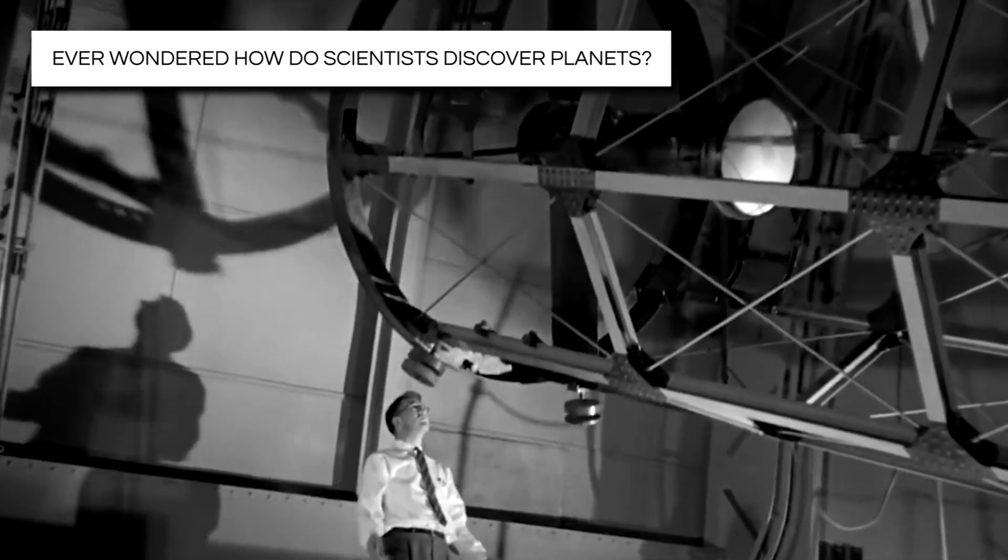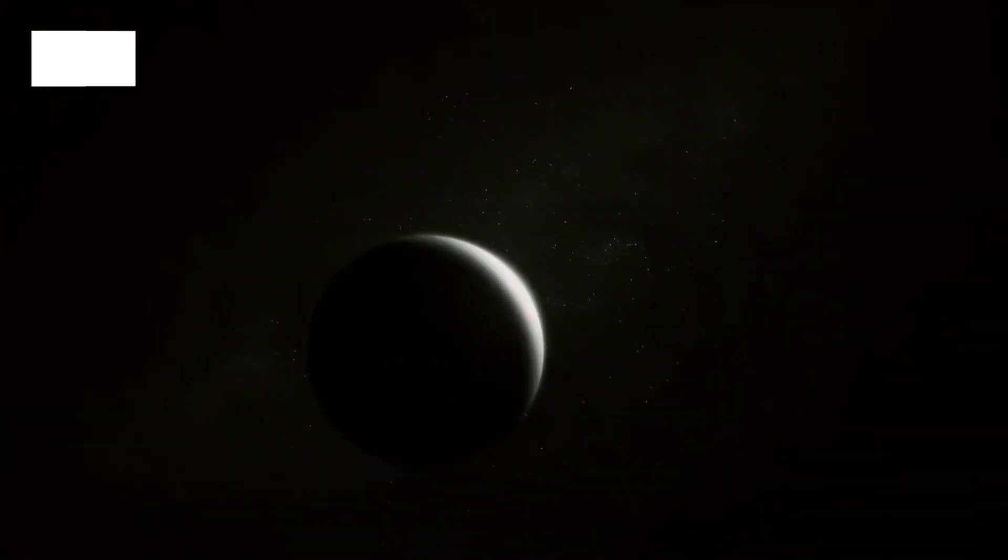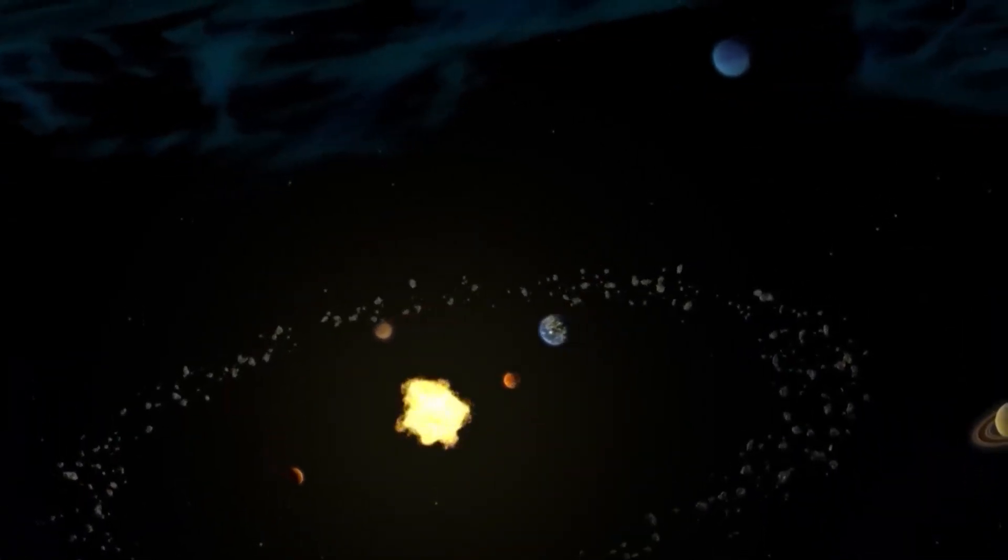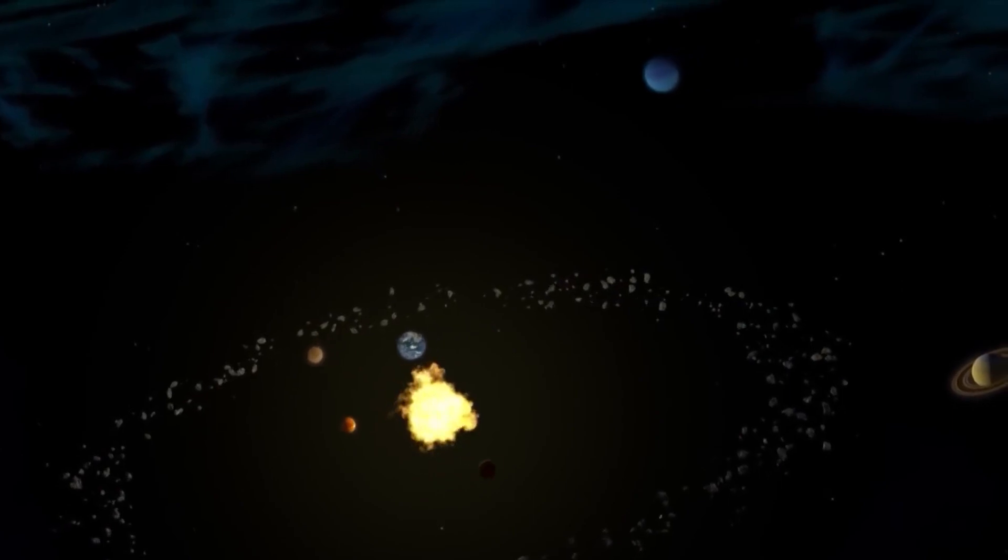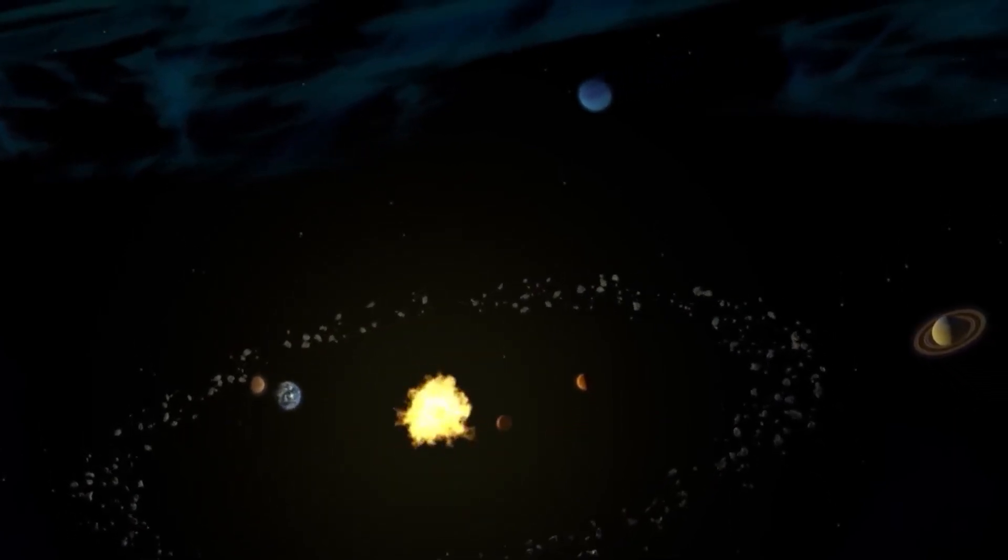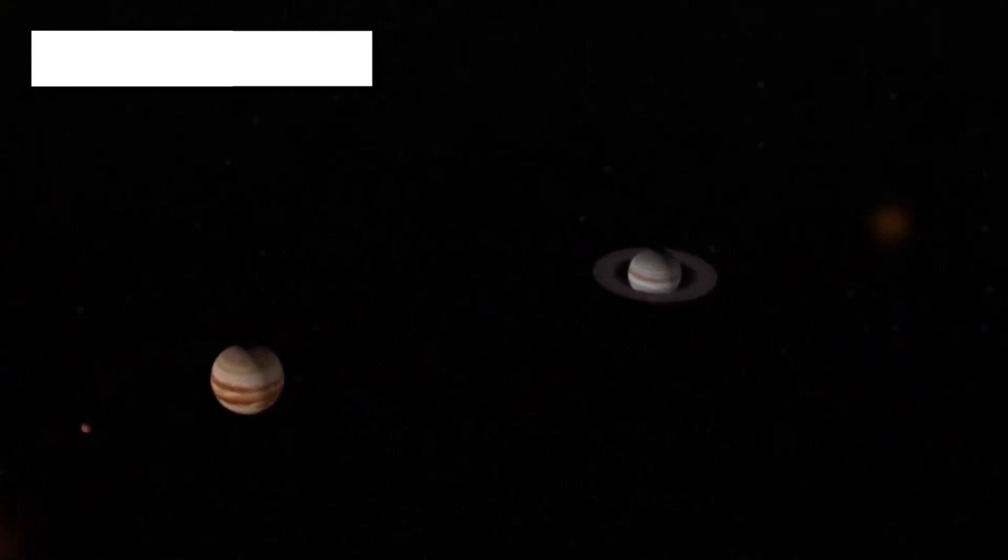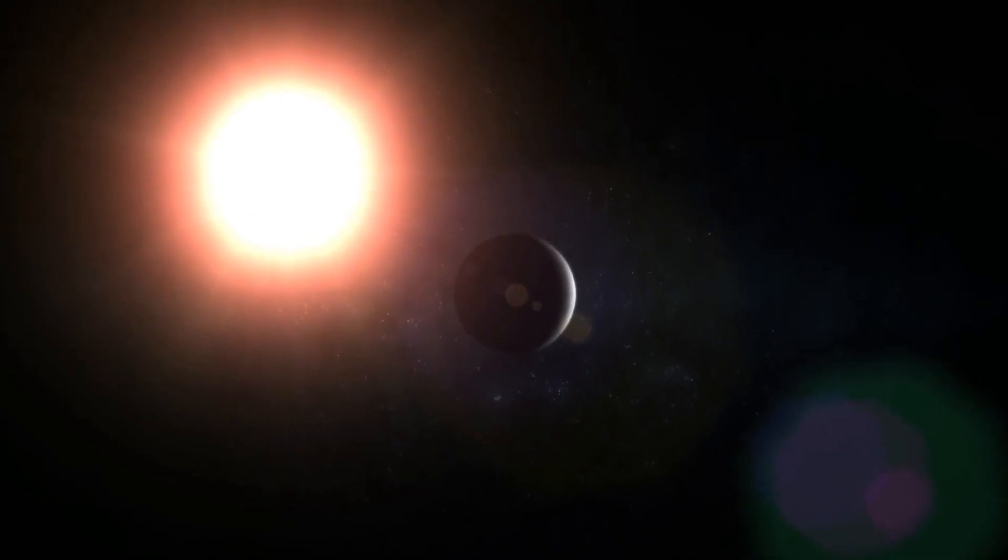Ever wondered how do scientists discover planets? Well, the answer is here. Scientists discover most exoplanets using methods that don't directly see the planet itself. One way is by watching a star's light get fainter when a planet moves in front of it, like a tiny eclipse.